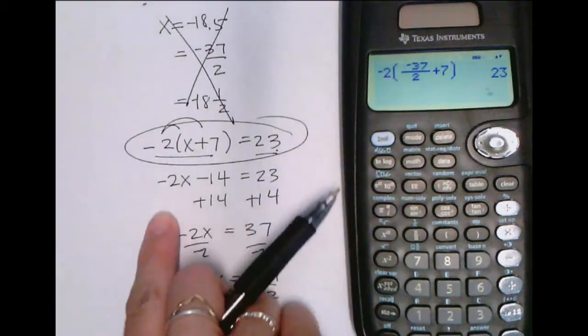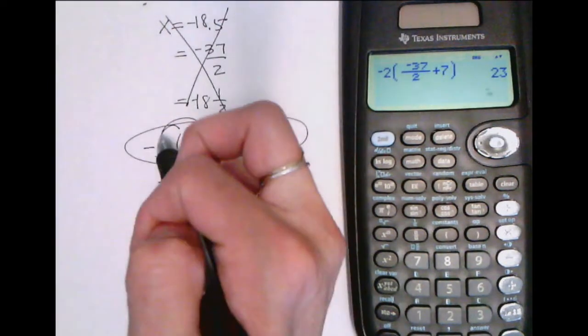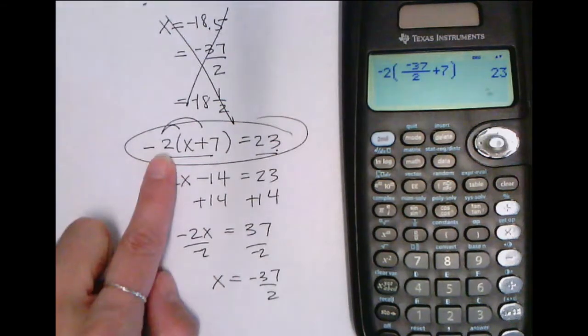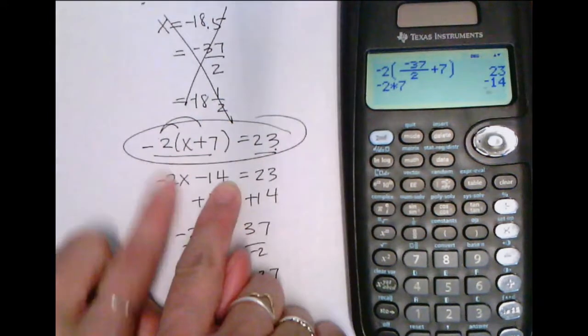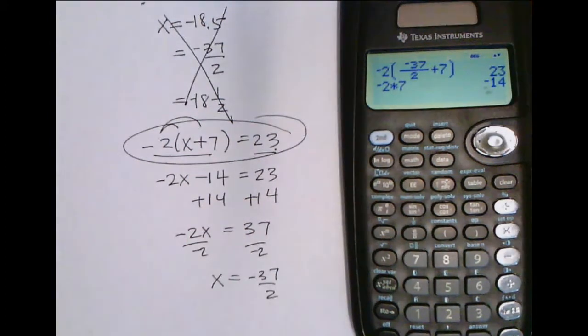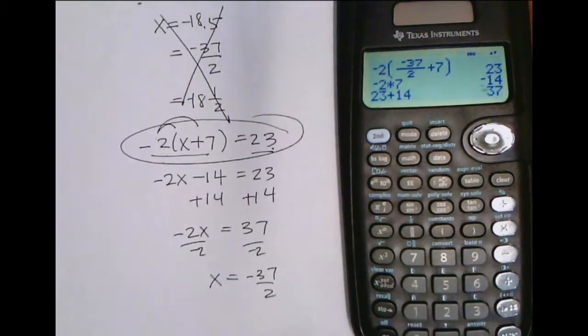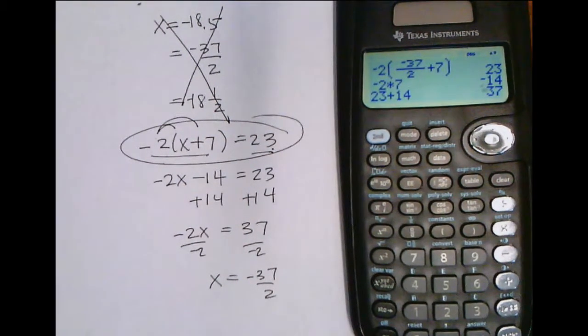Remember, the other thing you can do with the equations using the calculator is you can use it to help you with the simple math. If you're somebody who has mistakes, you're usually going to go, okay, negative 2 times 7. Oh, that's negative 14. That'll keep you from making simple mistakes. Even doing the 23 plus 14 in your calculator, there's nothing wrong with doing each of these pieces within your calculator.